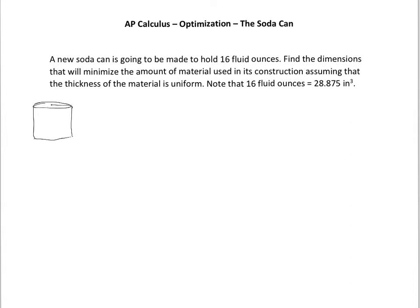We've got a radius, so that means we have a volume that we need to know, and the volume is πr²h, and we know our volume. I'm going to do this problem in two different formats. The first format is doing it knowing the volume. The second format is generalizing this because there is a pattern to all of these. So let's go ahead and do it first with this, and then generalize our problem.